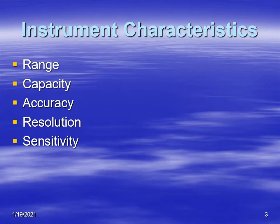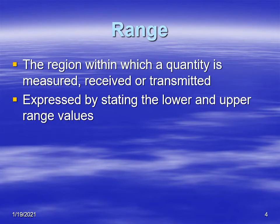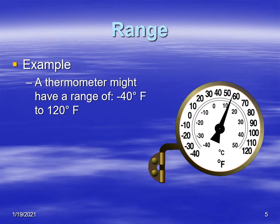We'll start out with range first. Range basically is the region in which you make your measurement, typically expressed by the top and bottom values of that instrument. An example here is a bimetal thermometer. The bimetal thermometer shows the scale going from 120 degrees Fahrenheit all the way down to minus 40, so the range is 120 down to minus 40. That's where you make your measurements.